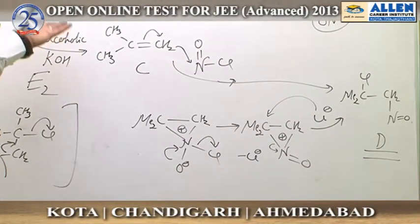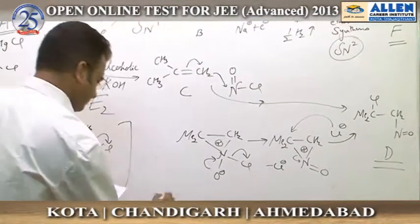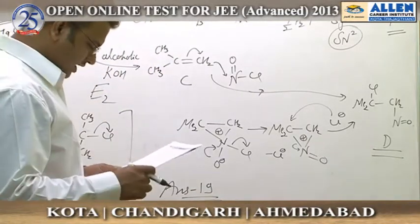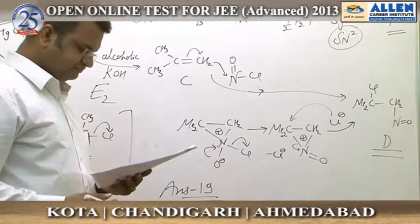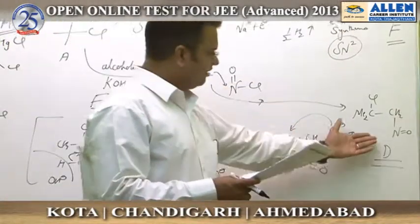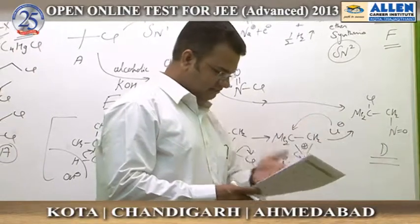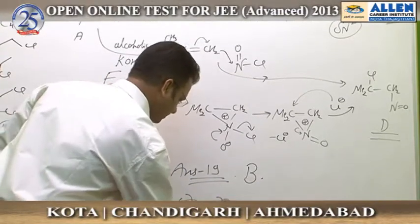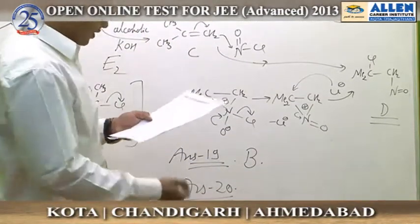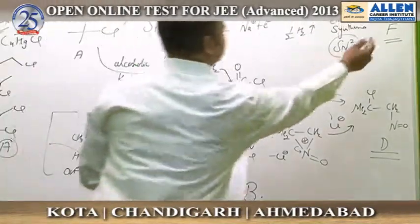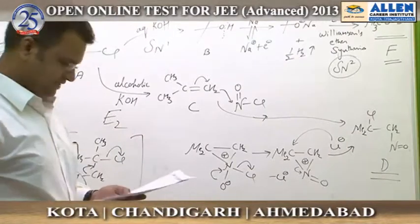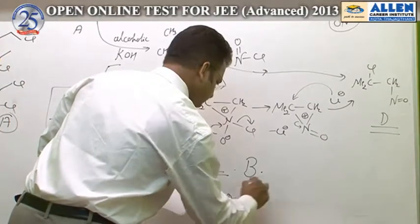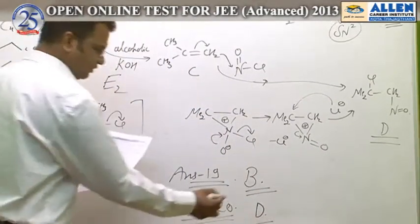Now that the reaction sequence is completely solved, for question number 19, straight away structures are given — the answer for 19 is B. For question 20, identifying F from the reaction sequence is very easy — it is an ether. The answer is option D. So for 19 it is B, and for 20 it is D.